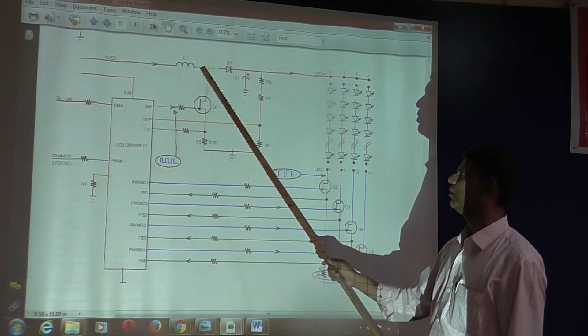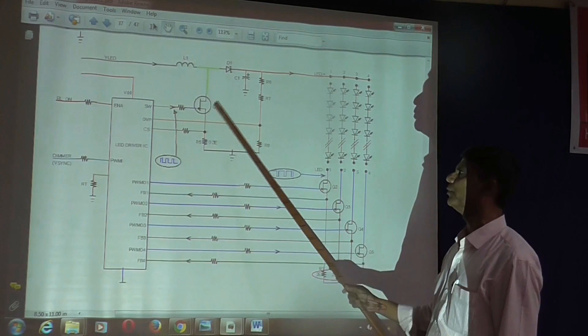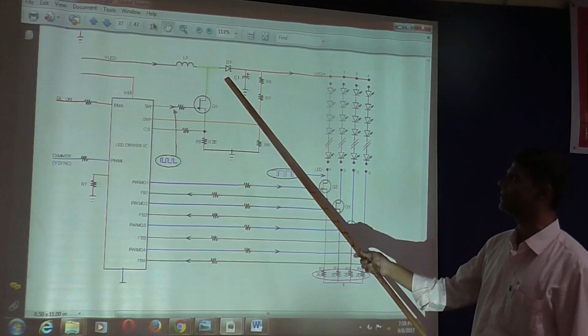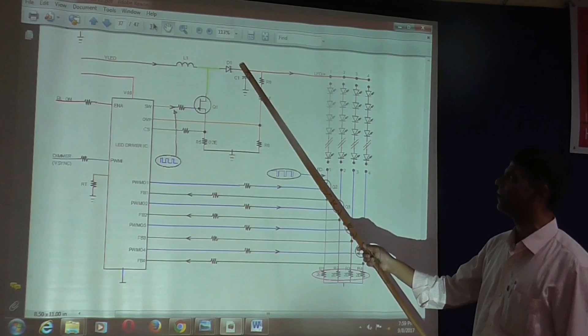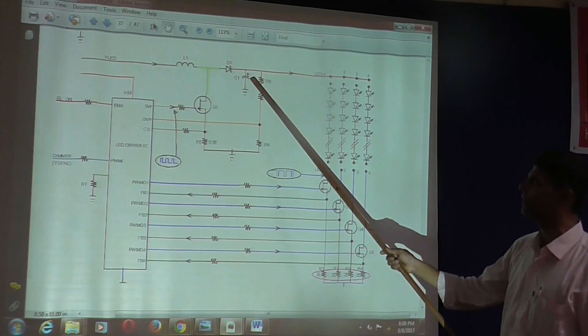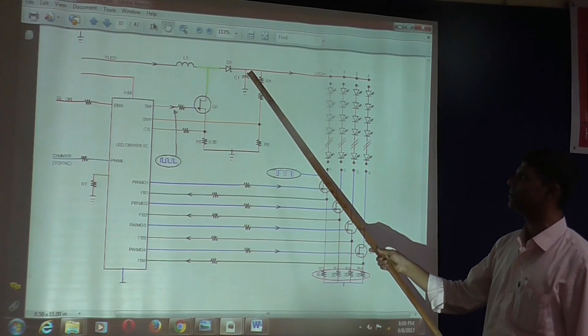L1 acts as a load to the drain of Q1. D1 Schottky diode rectifies these pulses and converts them into pulsating DC. This pulsating DC voltage is made smooth